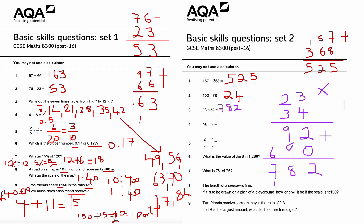Question number four: division using the bus stop method. 96 divided by 4. 4s into 9 go twice with one remainder, carry the 1. 4s into 16 go four times with zero remainder. My answer is 24.